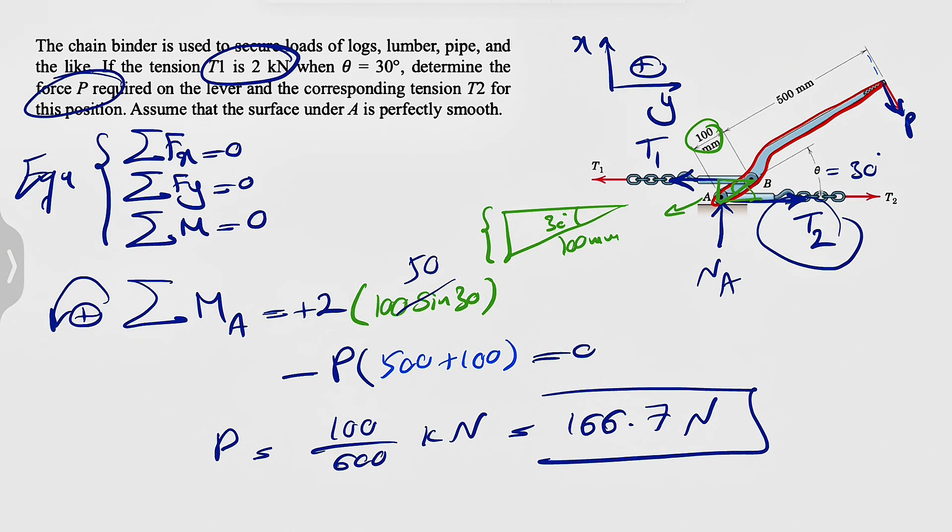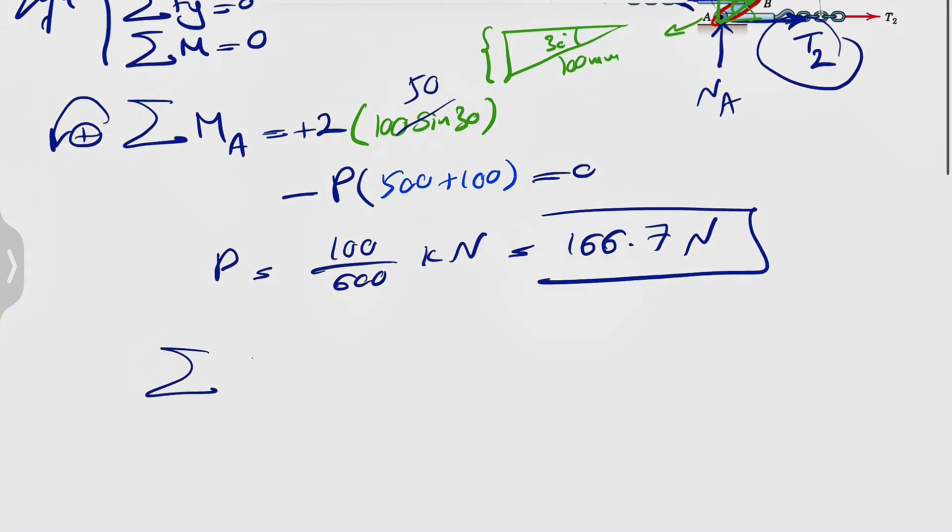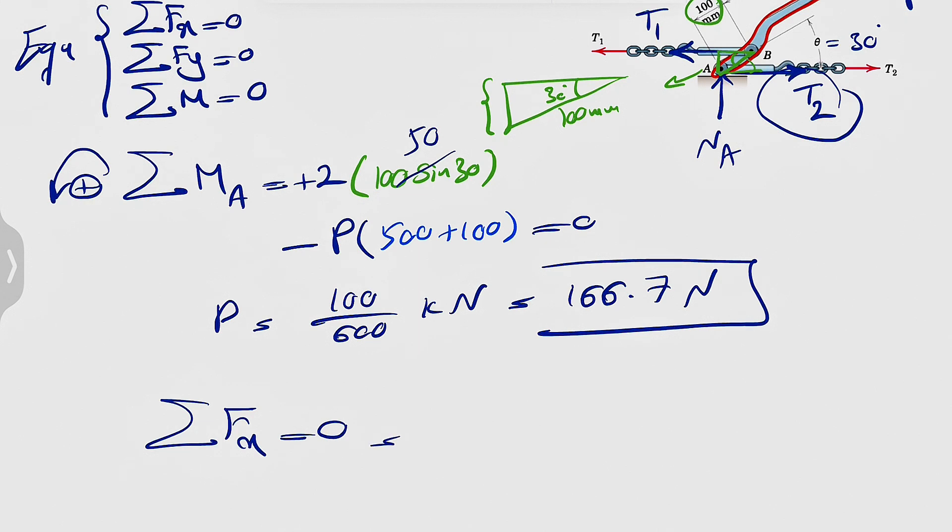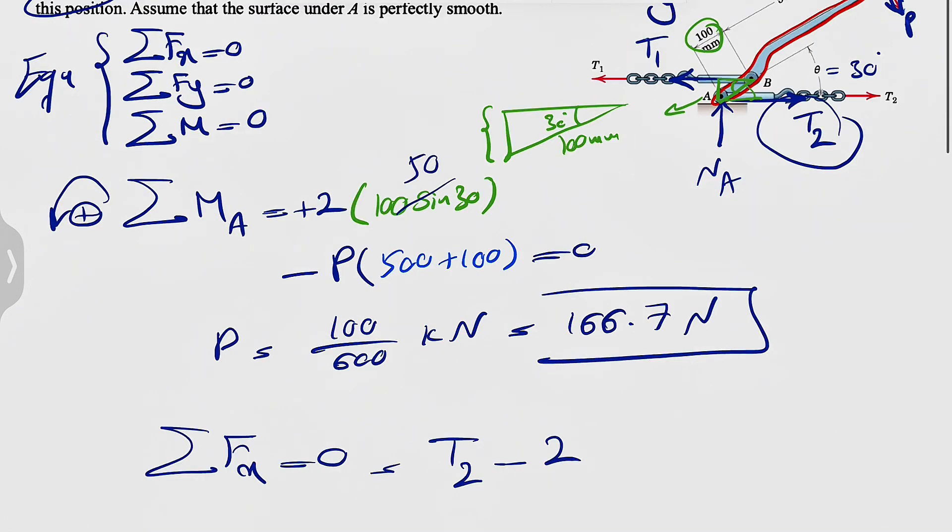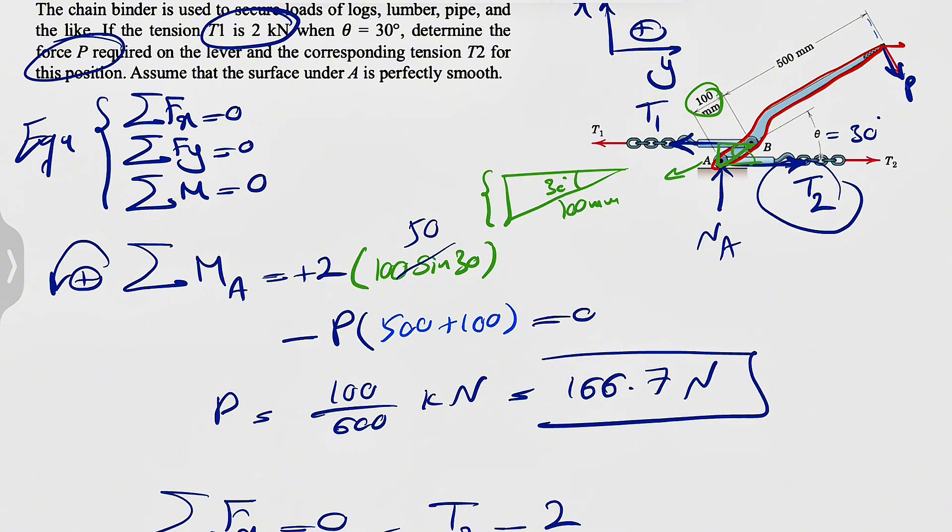Now we're trying to figure out T2, which is in the x direction. So we're going to do sum of all forces in x equals zero. We have T2, since it's to the right, positive, minus T1, which is two kilonewtons. We also need to figure out the x component of P, so we resolve P into x and y components.